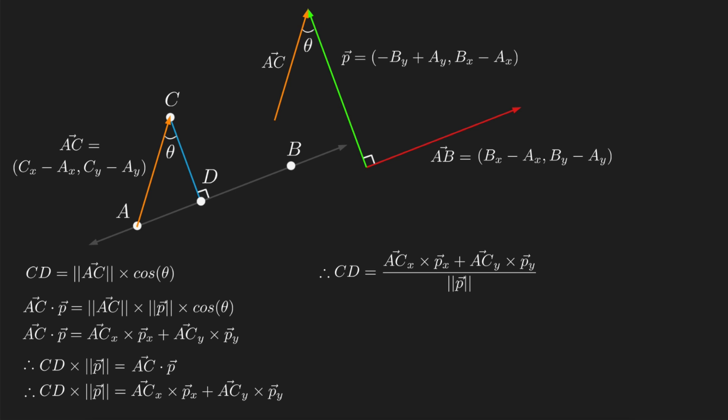Let's now isolate CD by dividing both sides of the equation by length p. We can then substitute in the calculations for the different components of the vectors. So the x component of AC becomes Cx minus Ax, the x component of p becomes negative By plus Ay, and so on.